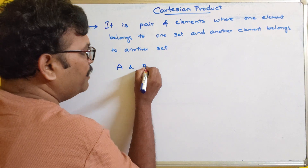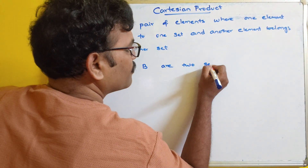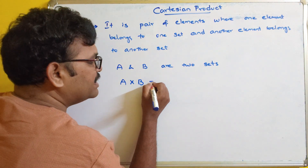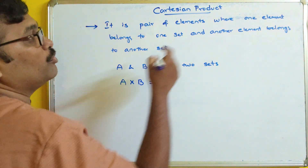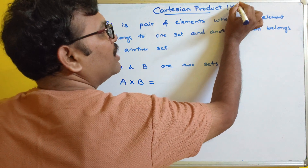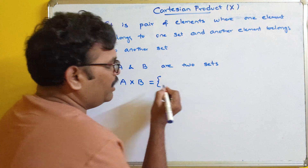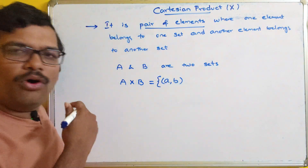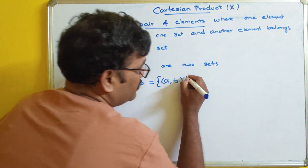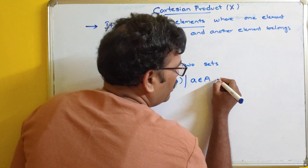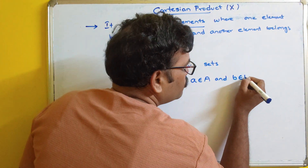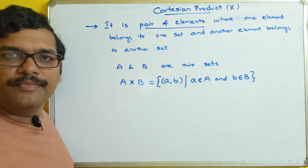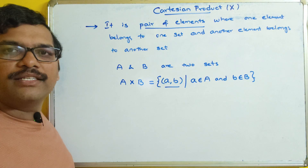For example, A and B are two sets. Then the Cartesian product A cross B — represented with the cross symbol — is all the pairs. A pair of elements, for example (a, b), where small a belongs to capital A and small b belongs to capital B. So all the combinations of these pairs is called the Cartesian product.